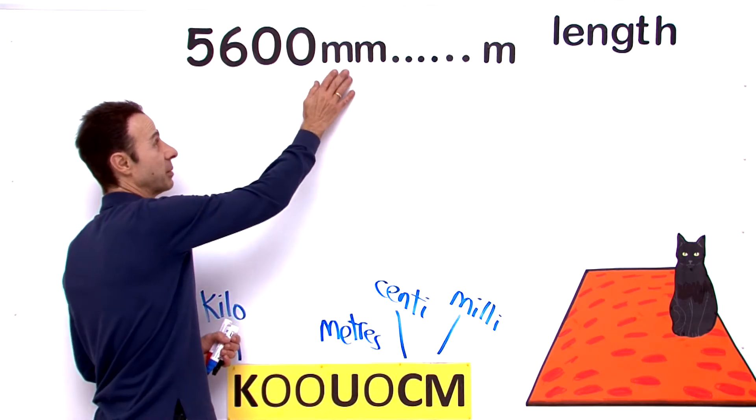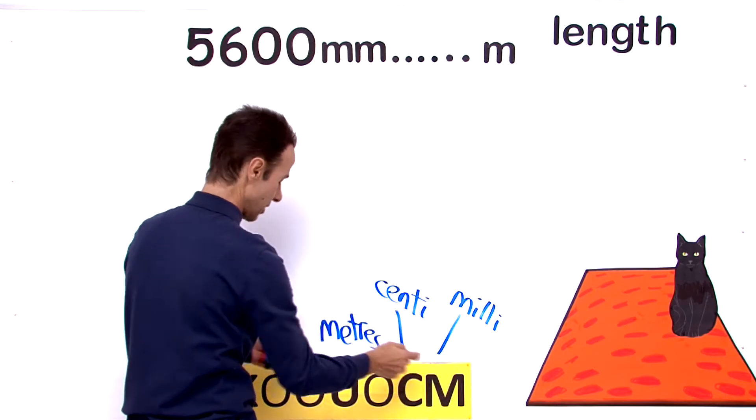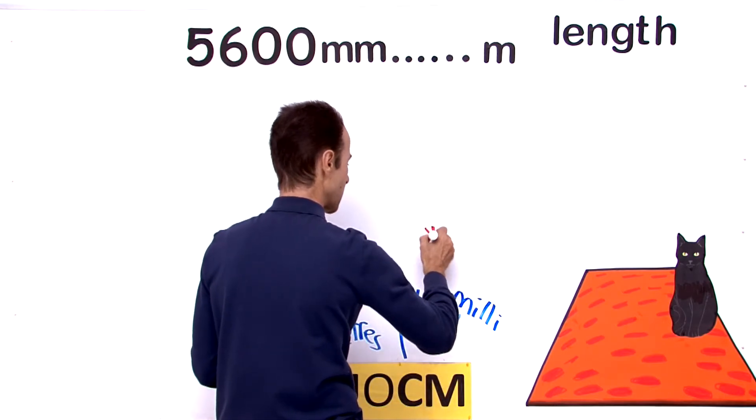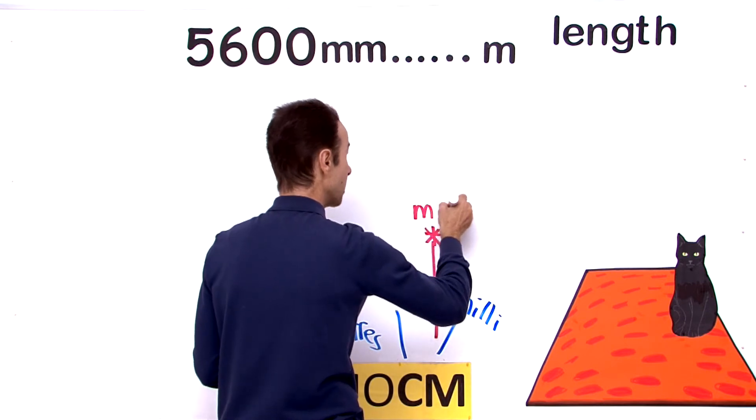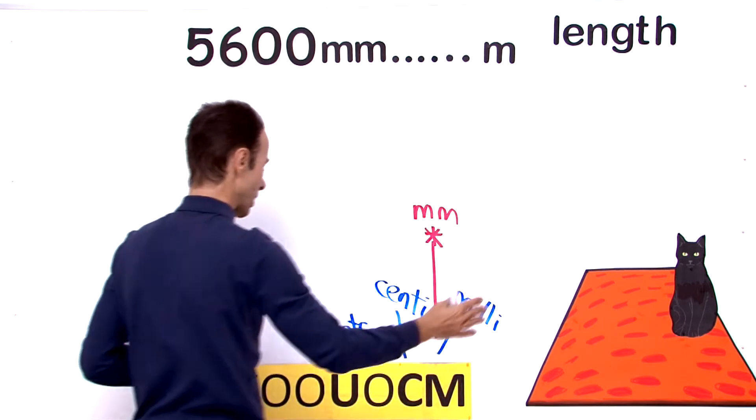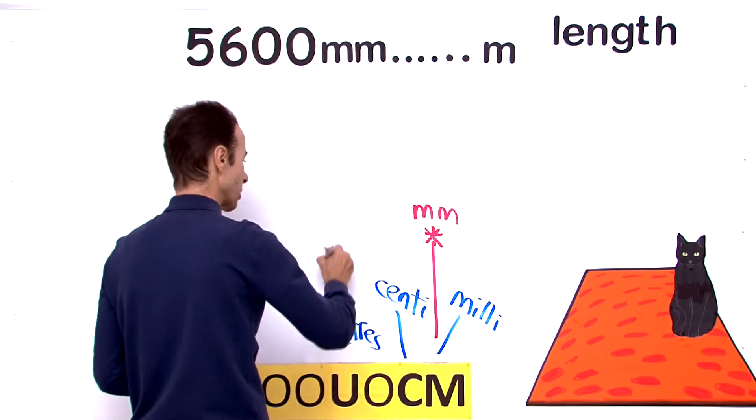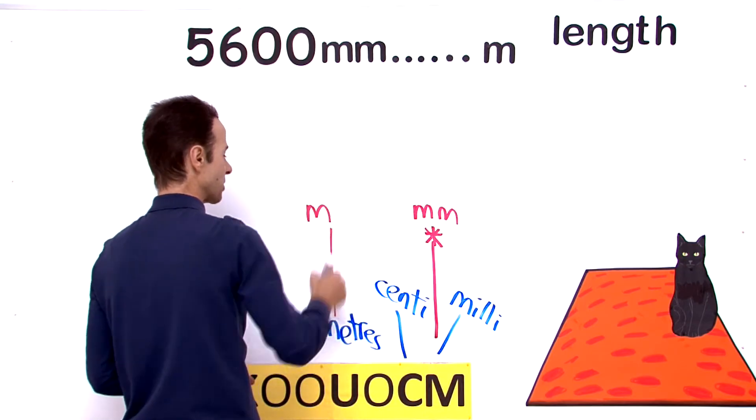So let's identify where the millimeters is. Well, millimeters is right here, isn't it? So we are going to start here at millimeters. We are going to move to meters. Now where is meters? Meters is under units. There is meters, so meters is going to be right there in the middle.